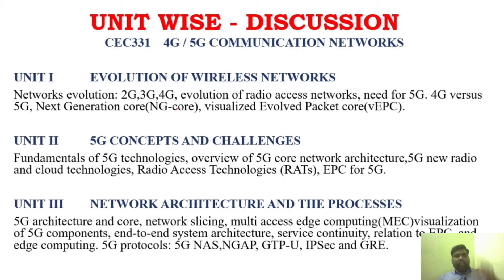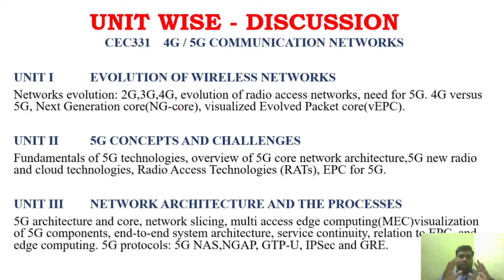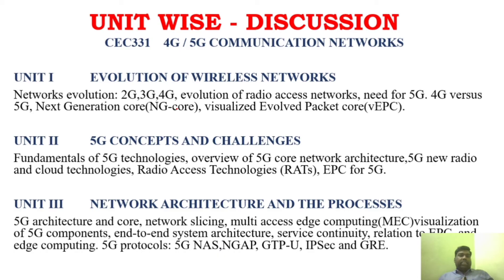The evolution goes: 2G, then 2.5G, then 3G, 3.5G, 3.75G, then 4G, then 5G. It covers about 3 to 4 key technologies — starting with the internet, then GPRS, then 3G networks with CDMA support, then HSDPA, then LTE, and now 5G networks with different technologies.